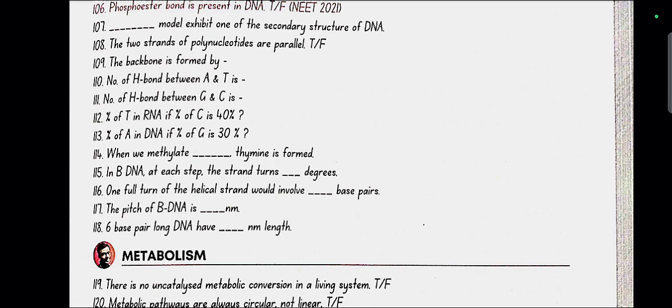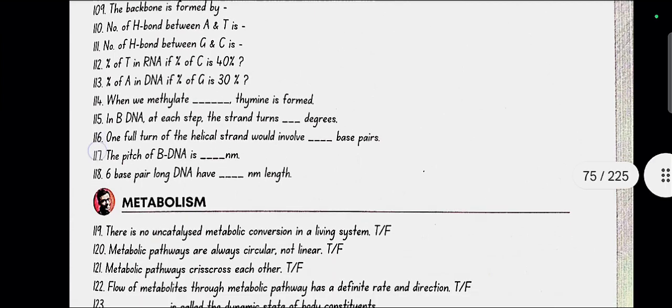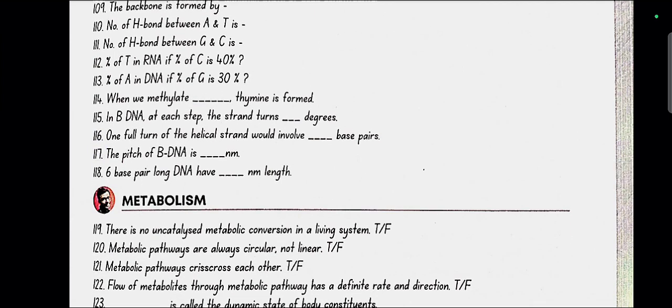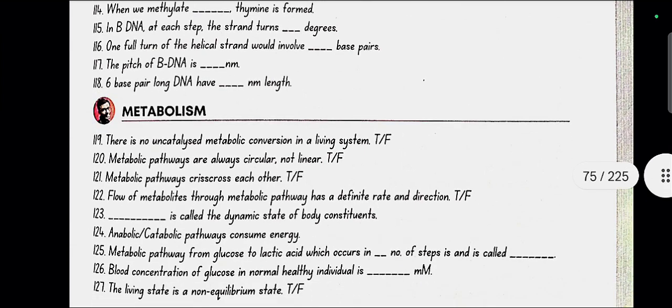Percentage of A in DNA if percentage of G is 30 percent: 20 percent. When we methylate uracil, thymine is formed. In B-DNA, at each step, the strand turns 36 degrees. One full turn of helical strand would involve 10 base pairs. The pitch of B-DNA is 3.4 nanometer. Six base pair long DNA have 2.04 nanometer length.